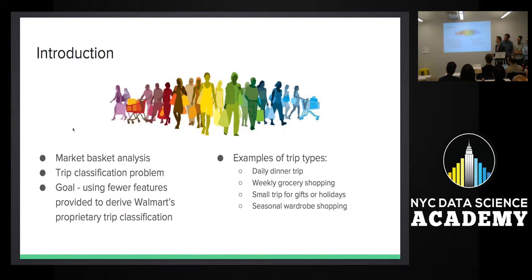Just a quick introduction of the data set. This was a market basket analysis. Basically Walmart created a system where they have about 38 trip classifications, whether you're grabbing dinner to go or making your weekly grocery shopping trip. Based on all the proprietary information they have on their shoppers, they classify it into these 38 groups. What they asked of the Kaggle community was, given a limited set of features, can you come up with the same classification that Walmart uses in a more efficient manner?